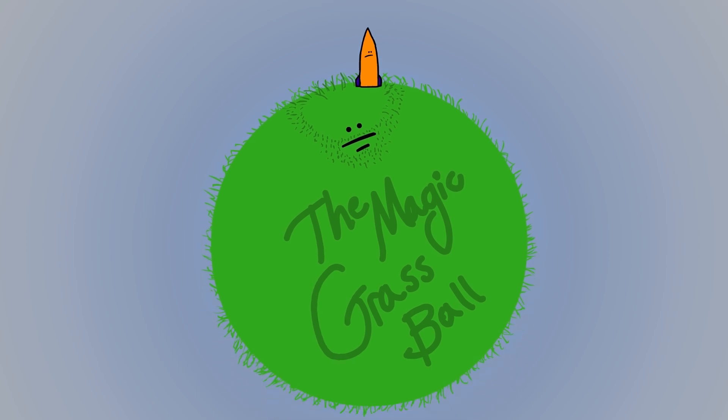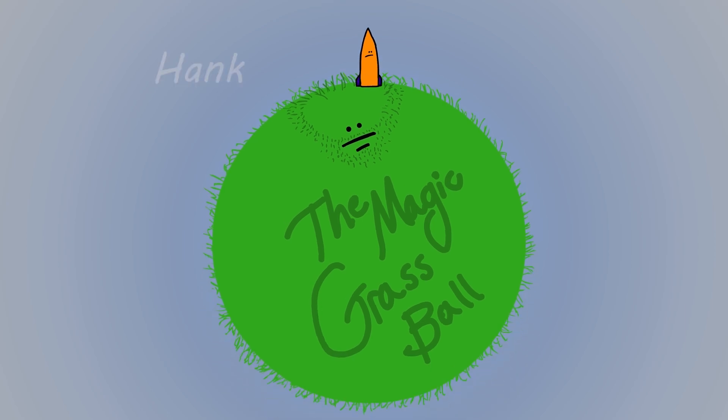Let's assume this magic ball of grass is a planet and there is no air resistance. This is a rocket, Hank.